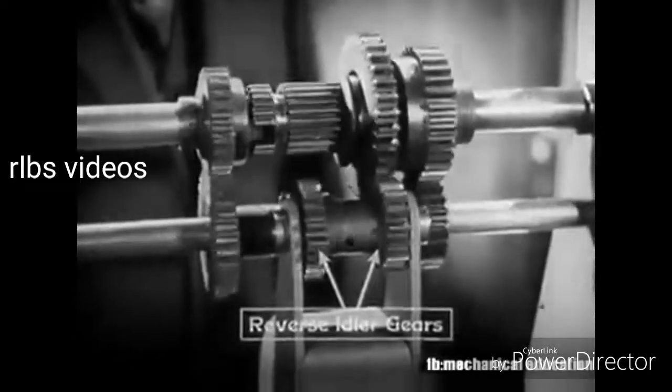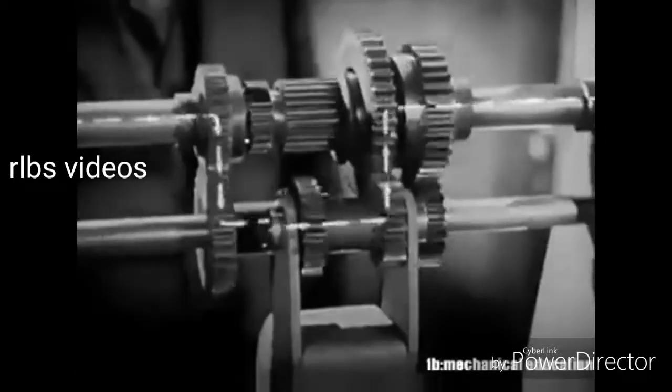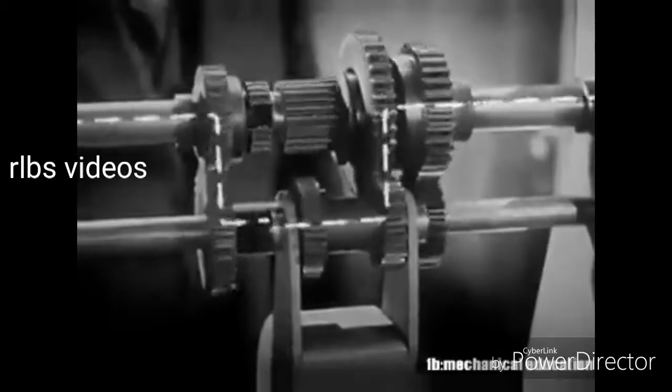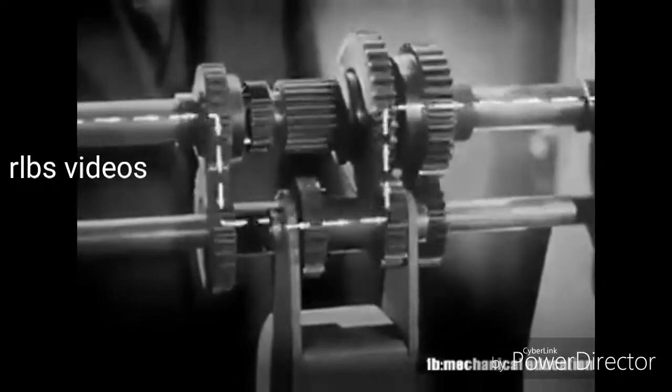With the gears shifted into reverse, the power travels through the transmission in a path like this. We now have three sets of spinning levers for going forward, and one for reverse.